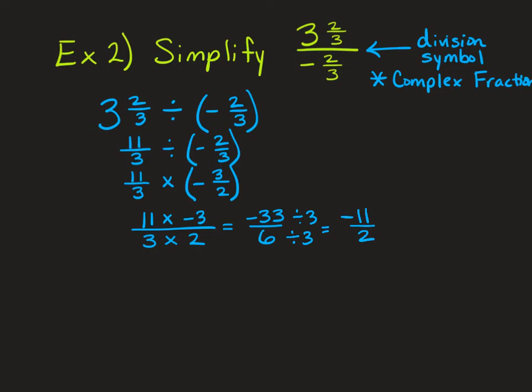And I get negative 11 over 2. That is an improper fraction. So I'm going to go over here to this side and just review this again. We want to show how to go from an improper fraction to a mixed number. So 11 divided by 2 looks like this. 2 goes into 11 five times. 5 times 2 is 10. 11 minus 10 is 1. So I have 5 with a remainder of 1 half. So that's negative 5 and 1 half.